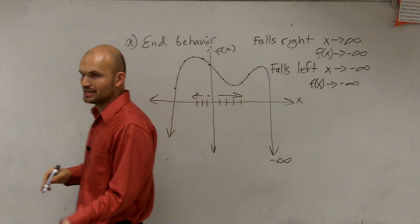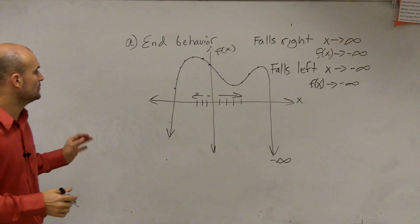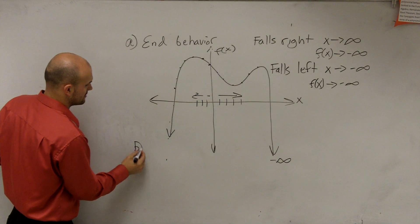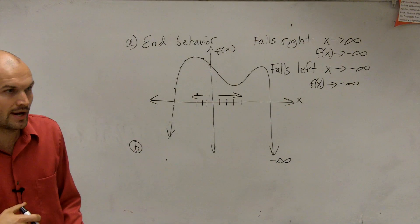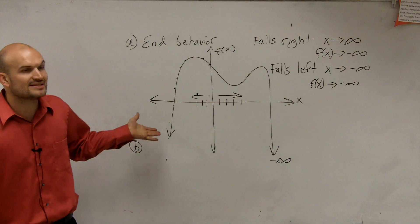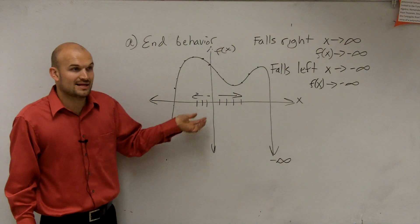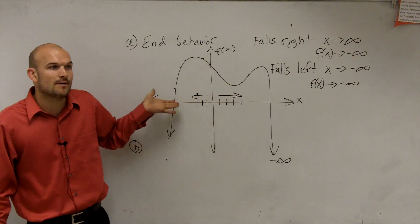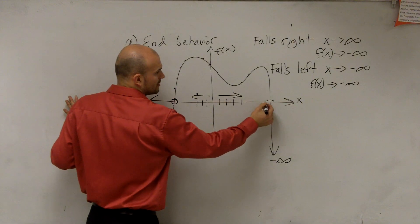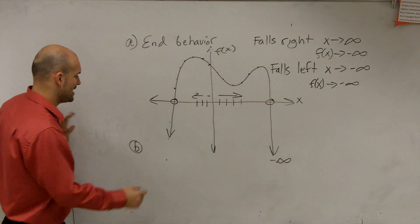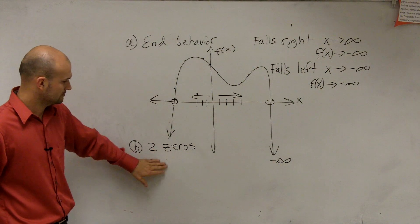So you just need to understand it falls left and falls right. Next, for part B, we need to estimate the zeros — how many zeros we have. The zeros, or roots, or x-intercepts of our function — that's your x-intercept. We have one right there and one right there, so we have two zeros.